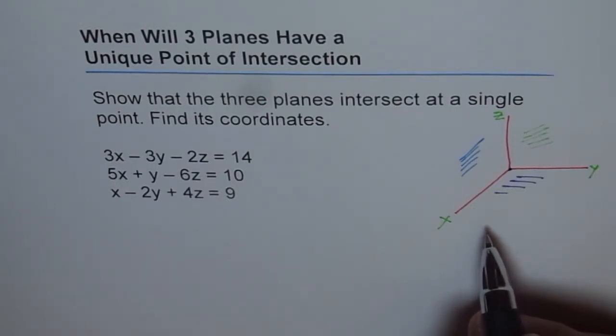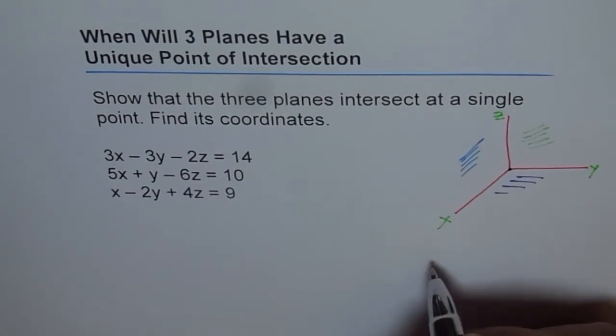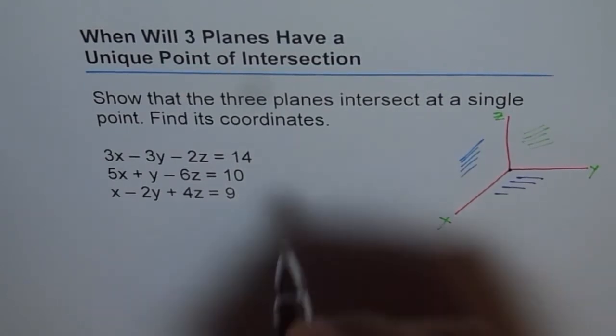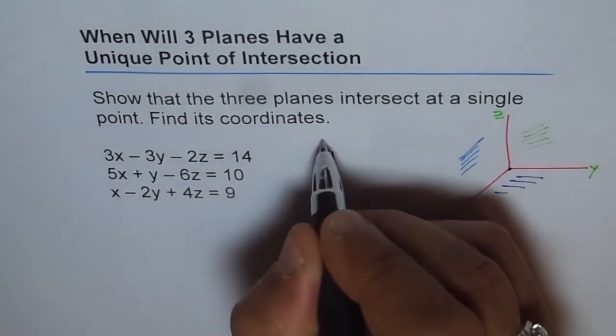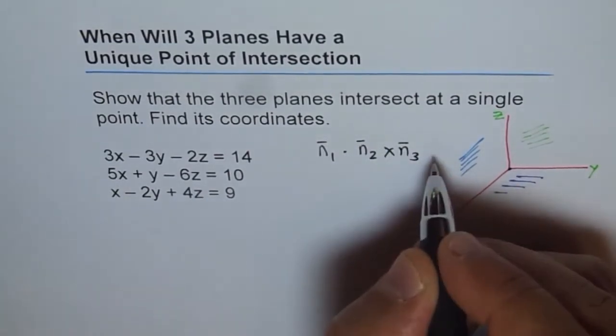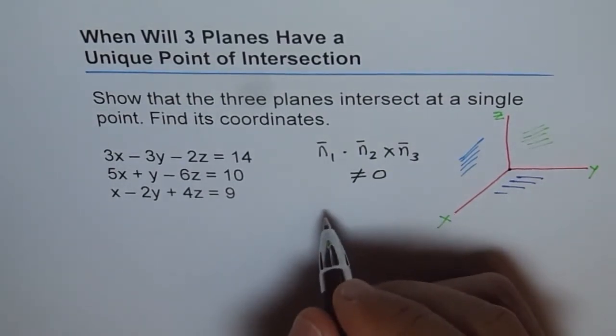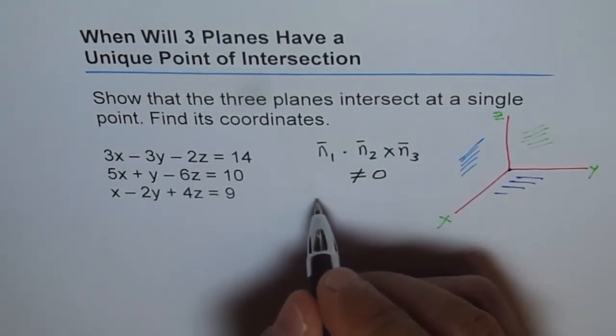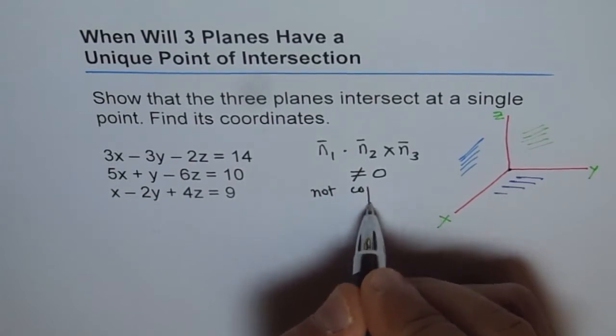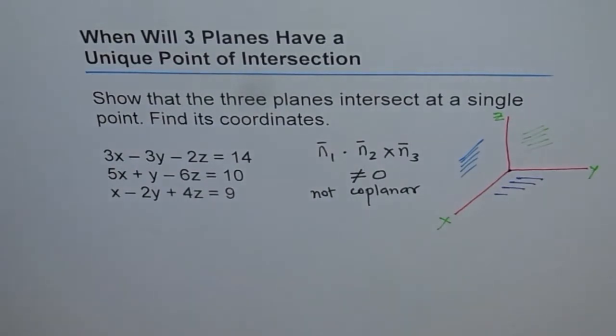So if they intersect at a single point, then their normals are not in the same plane. That means that if we do scalar triple product of the normal, that is, if we do n1 dot n2 cross n3, then this will not be equal to 0, because they are not coplanar. And that is the condition when the planes intersect at a single point.